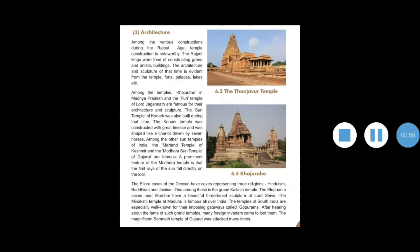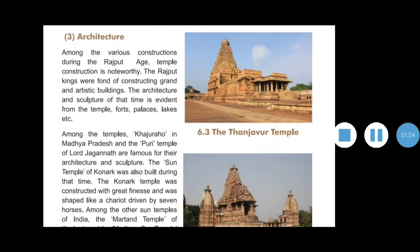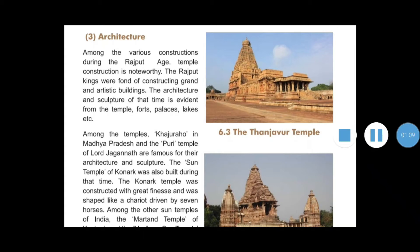Today, in the same chapter, we are going to study about the architecture among the various constructions during the Rajput age. Temples were constructed in north India, as the Rajput kings were fond of constructing grand and artistic buildings. The art and sculpture of that time is evident from the temples, forts, palaces, lakes, and more.